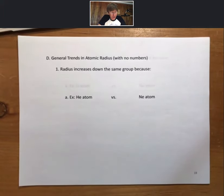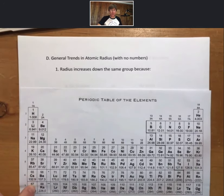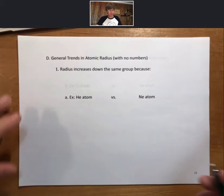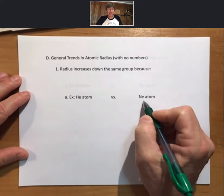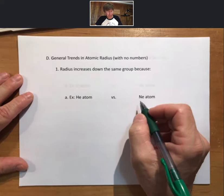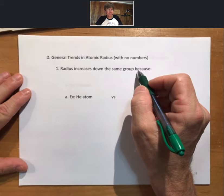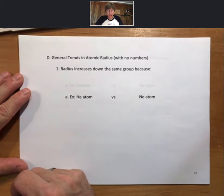And there are two general trends that you have to know. One is that radius increases down the same group, and just a refresher, a group is a column in the periodic table. Down the same group, our example is going to be helium and neon. They are in the noble gas group. Radius increases down the same group because n increases.